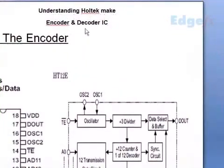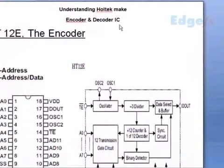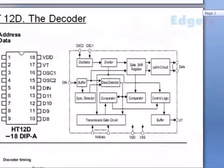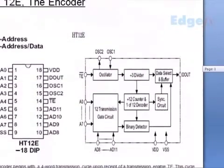Understanding Holtek HT12E encoder and HT12D decoder ICs. The encoder IC is called HT12E and the decoder IC is called HT12D. They have operating voltages from 2.4V to 12V and they are CMOS ICs.